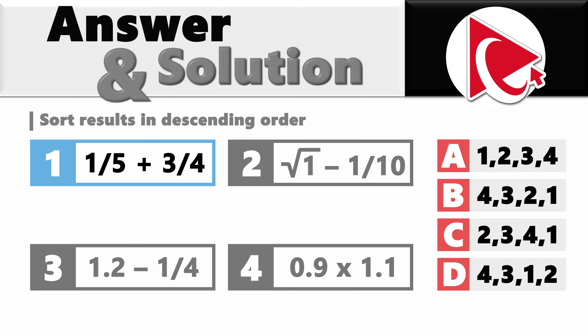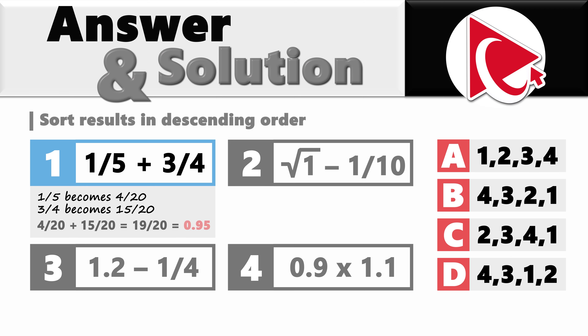In the first expression, to add these fractions, you need a common denominator, which is 20. So 1/5 becomes 4/20, and 3/4 becomes 15/20. 4/20 plus 15/20 equals 19/20, which equals 0.95.